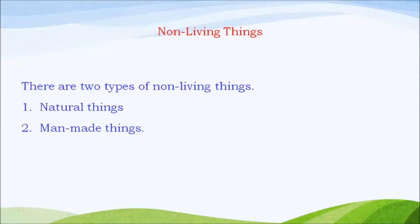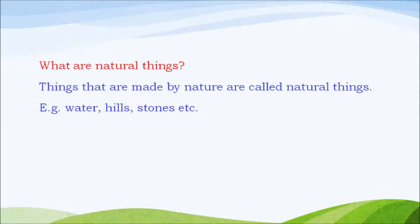What are natural things? Things like water, hills, stones, mountains etc. that are made by nature or that exist in nature are called natural things.